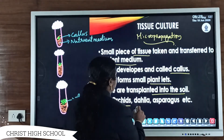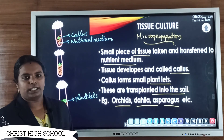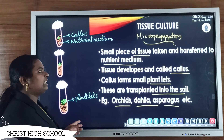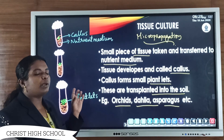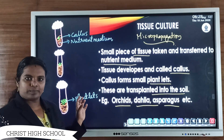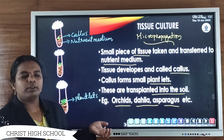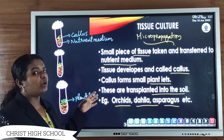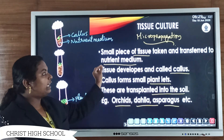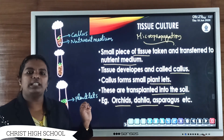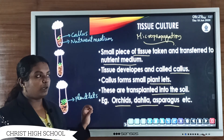Examples of plants propagated by tissue culture include orchid, dahlia, and asparagus. One of the most important advantages of tissue culture is that within a short period of time, we can produce a large number of plants — hundreds of young plants — compared to sexual reproduction, which produces only a few. This makes tissue culture highly efficient for large-scale plant propagation.